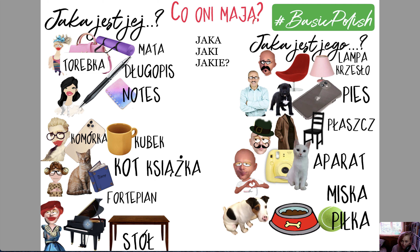Now we've got a baby grand piano — fortepian, masculine noun — and a stool/table. The grand piano is black and the table is dark brown. Jaki jest jej fortepian? Jej fortepian jest czarny. Jaki jest jej stół? Jej stół jest ciemno-brązowy — dark brown.